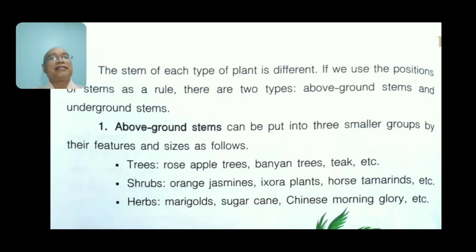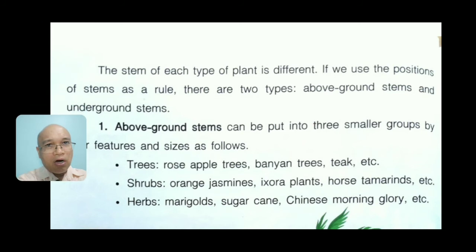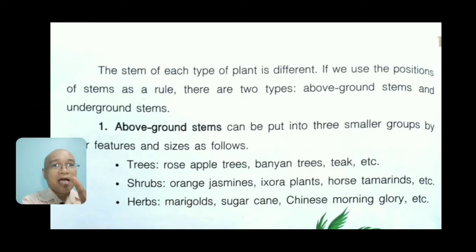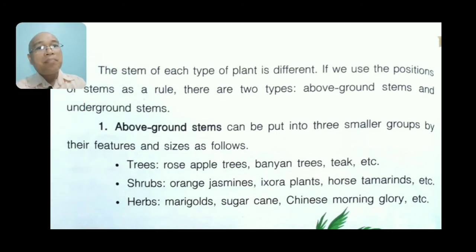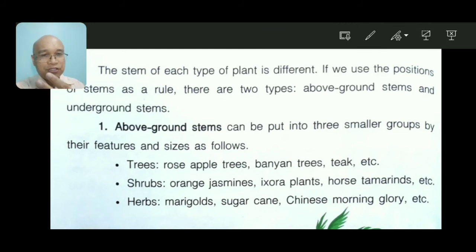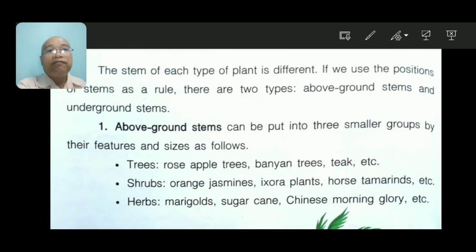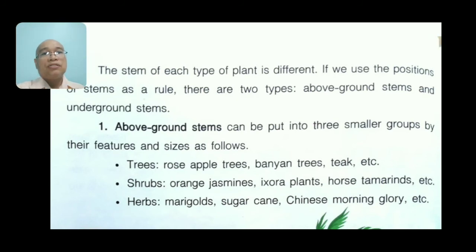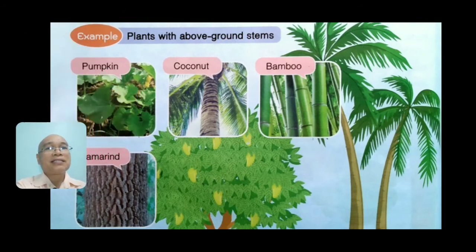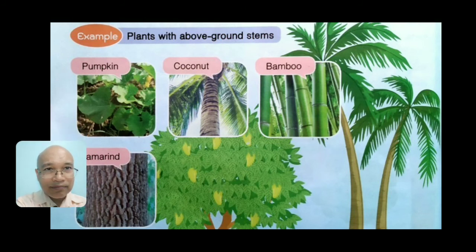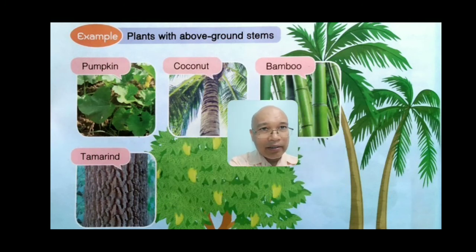The stem of each type of plant is different. Using the position of stems as a guide, there are two types: above-ground stems and underground stems. Above-ground stems can be grouped into three smaller groups by features and sizes: trees (like rose apple, banyan, teak), shrubs (like orange jasmine, ixora, horse tamarind), and herbs (like marigolds, sugarcane, Chinese morning glory). Examples of plants with above-ground stems include pumpkin, coconut, bamboo, and tamarind.